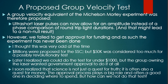A group velocity equivalent of the Michelson-Morley experiment was therefore proposed. Ultra-short laser pulses can now allow for an amplitude instead of a phase comparison of round-trip light durations, and that might lead to a non-null result. However, we failed to get approval for funding, and as such, the experiment has never been done. Billions of dollars were being proposed for the SSC, but $50,000 was considered too much for a possibly revolutionary test. Later, I realized we could do the test for under $1,000, but the group owning the laser wanted government approval. I soon realized that science is not just a quest for truth — it is often also a quest for money.